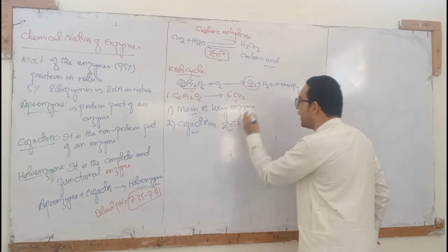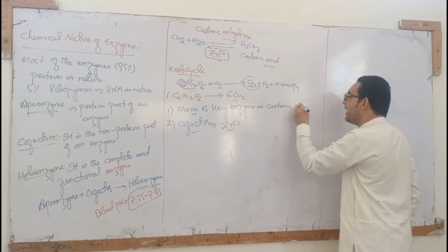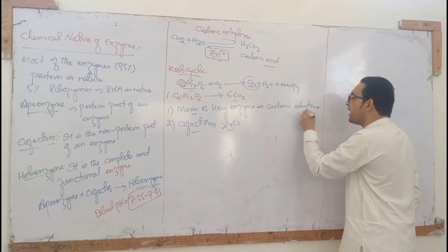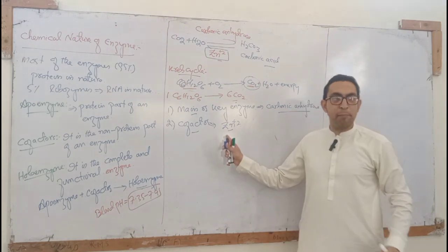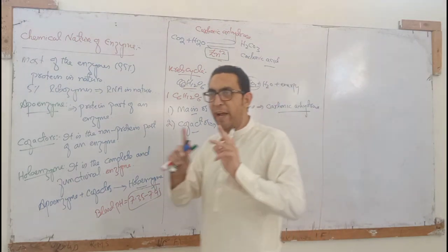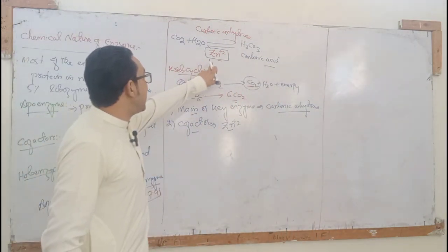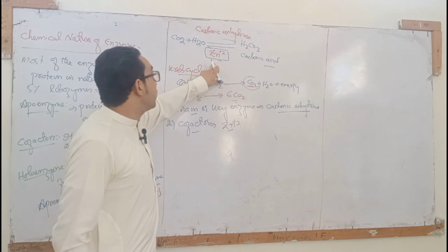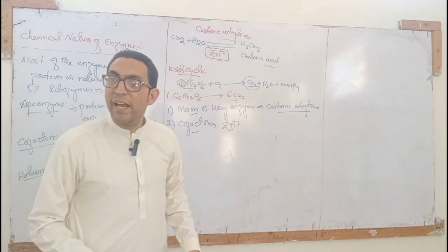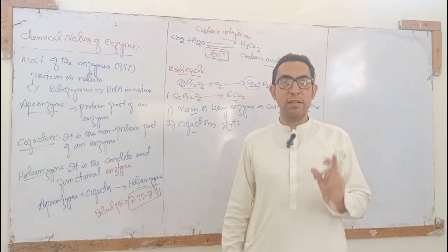So for every enzymatic reaction, we need two things: first, the main or key enzyme (the apoenzyme); and second, the cofactor. In this reaction, the main enzyme is carbonic anhydrase and the cofactor is zinc. Without zinc — that is, in the absence of the cofactor — carbonic anhydrase cannot catalyze this reaction.